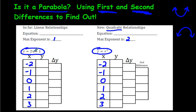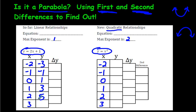2x means 2 times x. So substituting in negative 2: 2 times negative 2 is negative 4, and negative 4 plus 1 is negative 3. 2 times negative 1 is negative 2; negative 2 plus 1 is negative 1. 0 times 2 is 0, and 0 plus 1 is 1. 2 times 1 is 2, and 2 plus 1 is 3. 2 times 2 is 4; 4 plus 1 is 5. And 2 times 3 is 6; 6 plus 1 is 7.